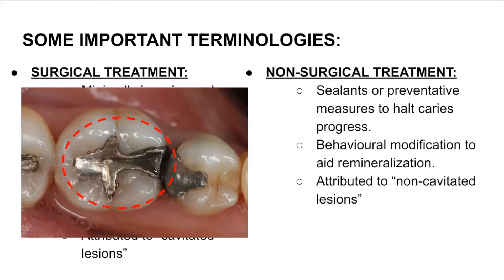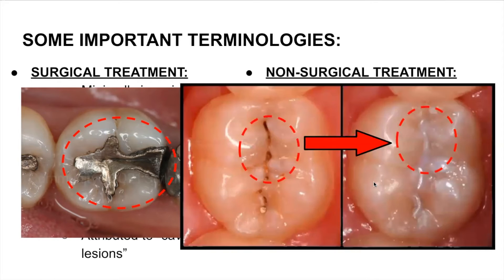Next is non-surgical treatment — sealants or preventative measures to halt the caries progress or prevent it from happening in the first place. Behavioral modifications will aid remineralization, and it's attributed to non-cavitated lesions. We see the change in color, glossiness, and texture, and then we seal it. From the exterior environment it's a barrier that prevents caries progress and helps resolve it.